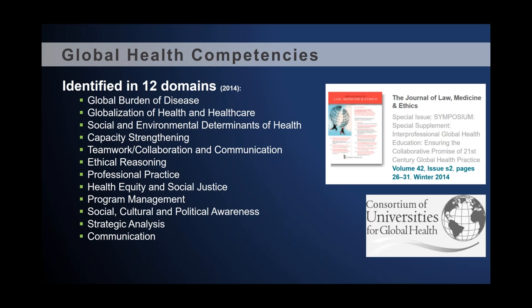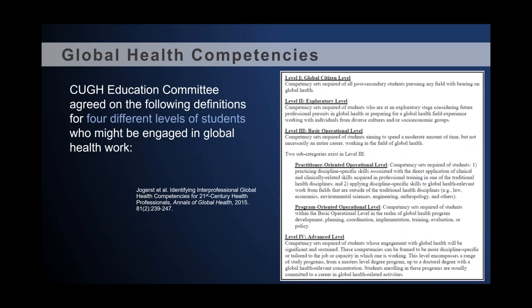In 2015, the committee continued to refine this and categorized what levels of students might be engaged in global health education and what content areas they would need to cover. They came up with a global citizen level — defined as all post-secondary — then a level two, which is more graduate or professional level, and then level three, the basic operational level across a career. The article is available on the CUGH website. We tried to refine thinking around what competencies are needed across different levels of students.